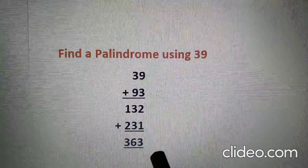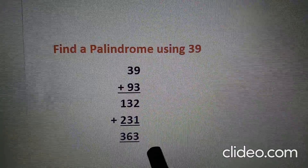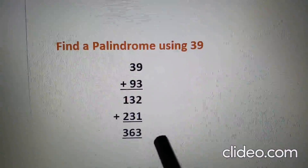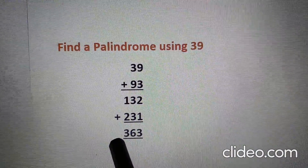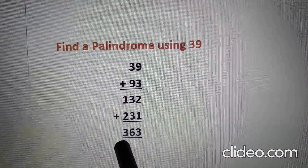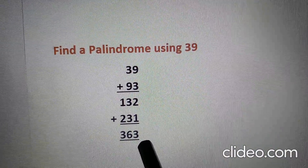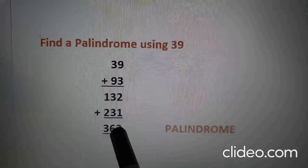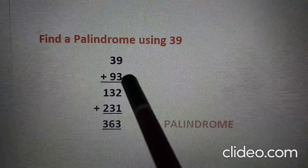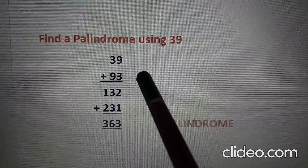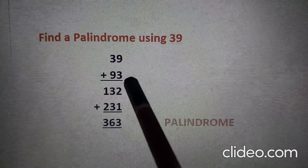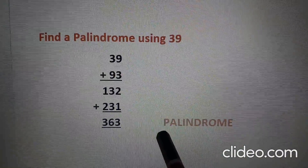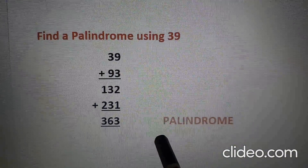Oh wow! 363 is a palindrome — it reads the same forward and backward. So the method is: write the number, reverse it, then add. Then reverse again, then add — keep doing this until you get a palindrome.